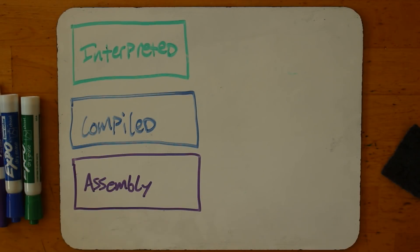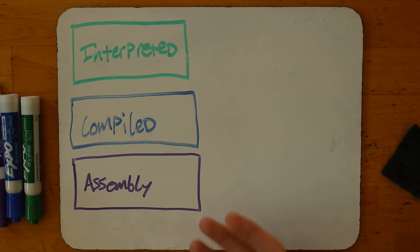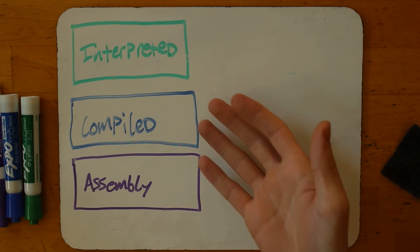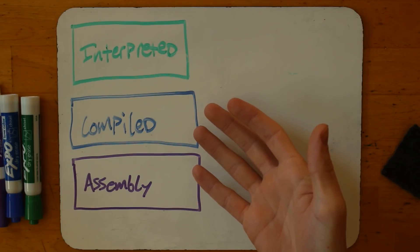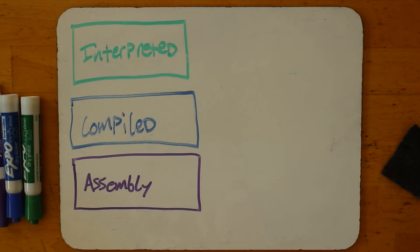In this video I want to tell you a little bit about three different kinds of programming languages: assembly language, compiled languages, and interpreted languages, and tell you a little bit about the different roles they play in the software industry.